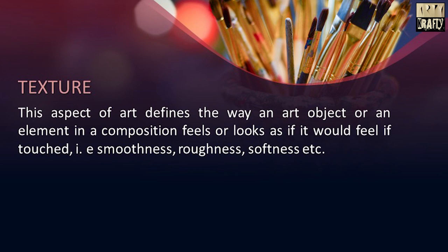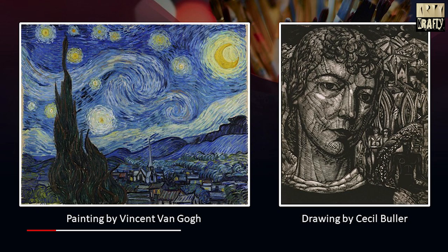Then comes texture. This aspect of art defines the way an art object or an element in a composition feels or looks as if it would feel if touched — that is smoothness, roughness, softness, etc. This is the painting done by Vincent van Gogh, and this is the drawing by Cecil Buller.